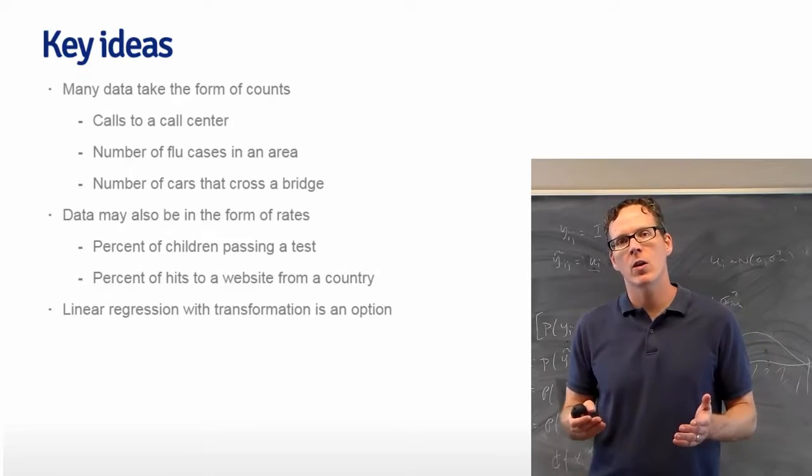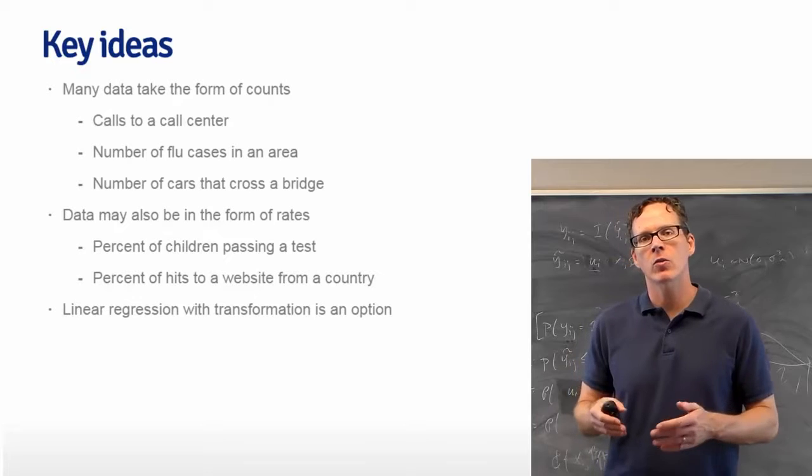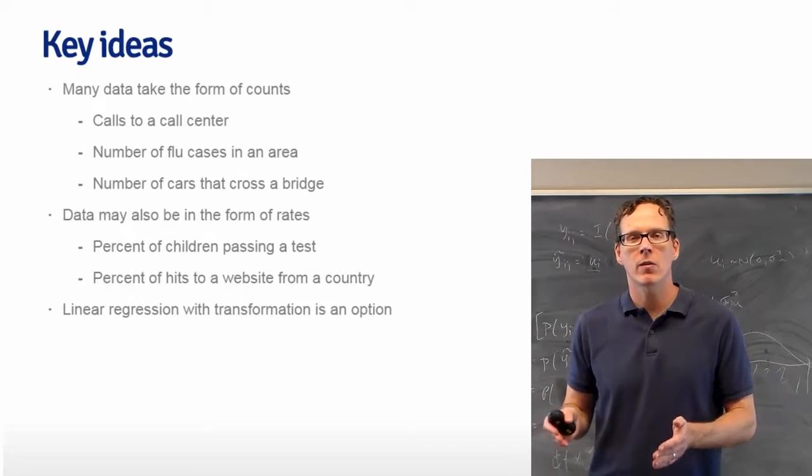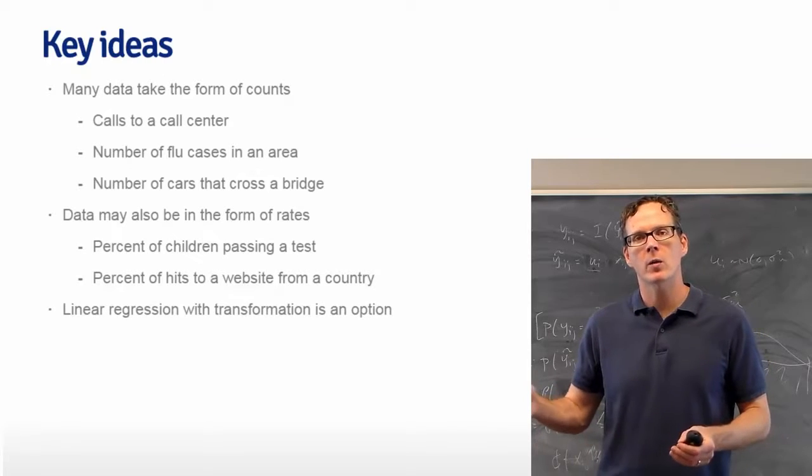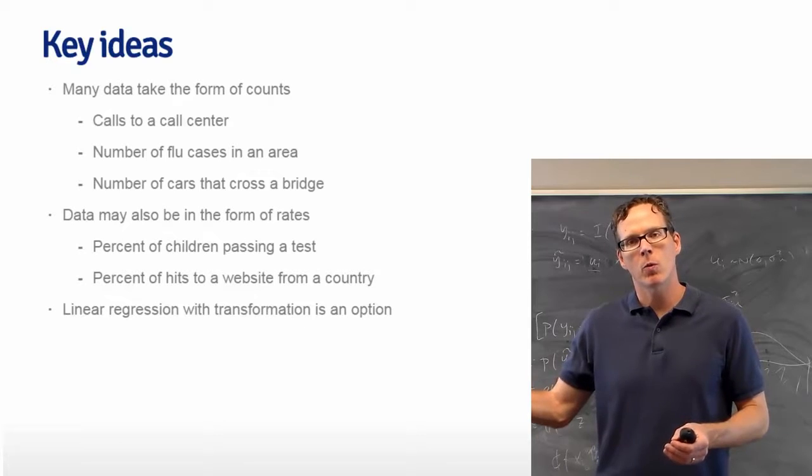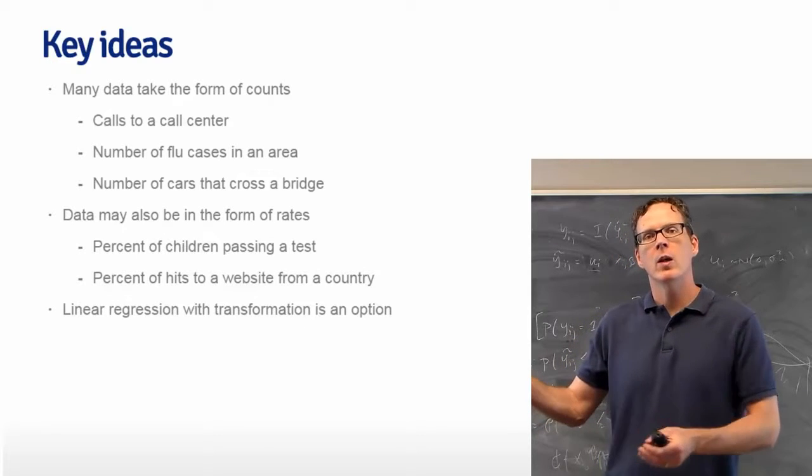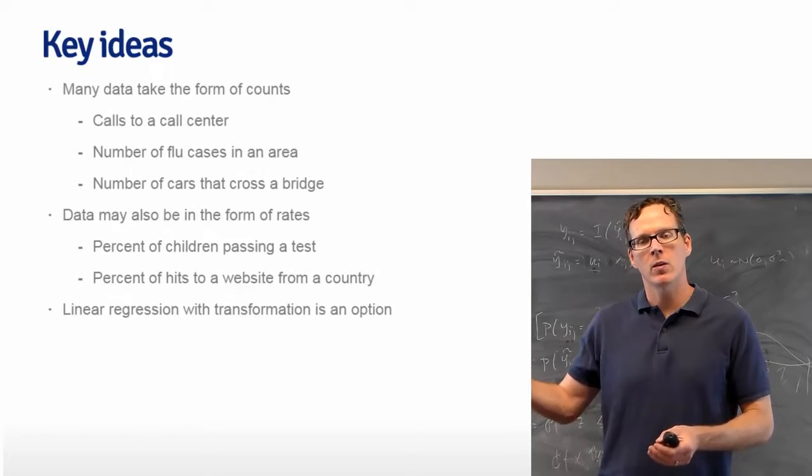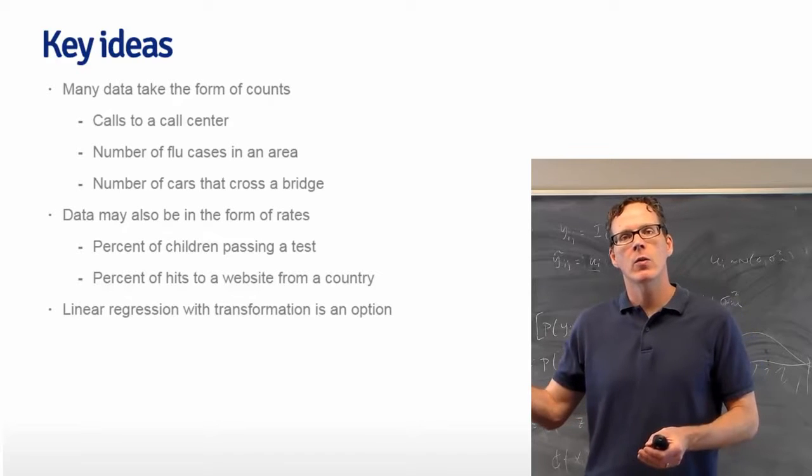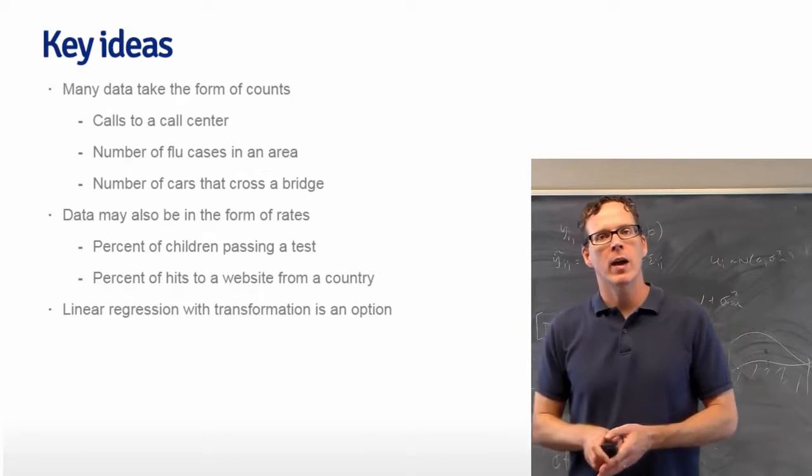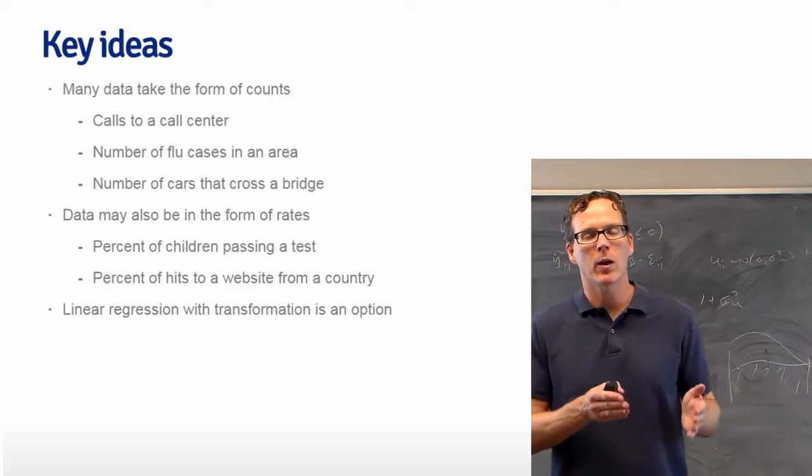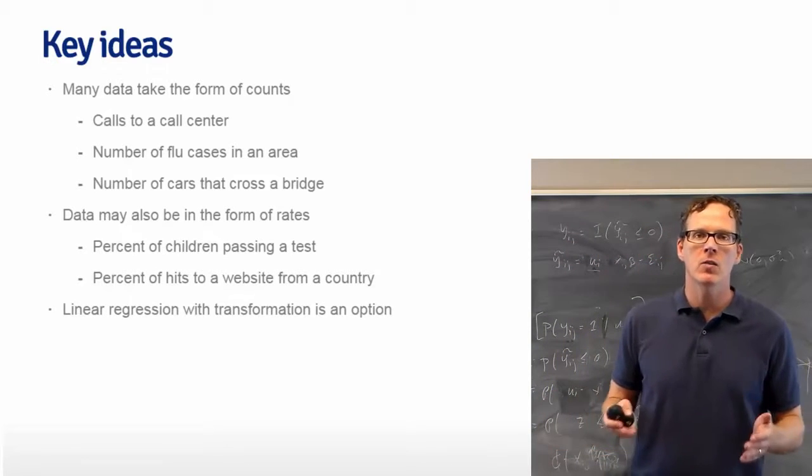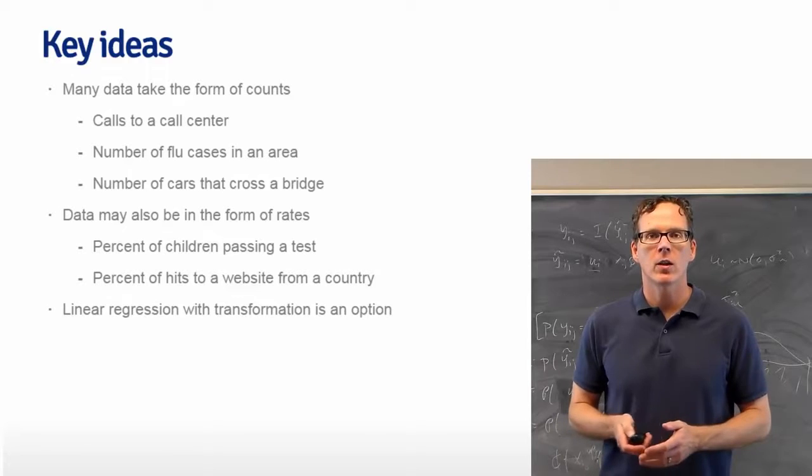A very common rate that occurs in biostatistics and public health where I work is the so-called incidence rate, which is the number of newly developed cases per person time at risk. All of these are instances of counts. Rates and proportions are also counts, both because the numerator is a count, and all of these can be handled with Poisson GLMs.